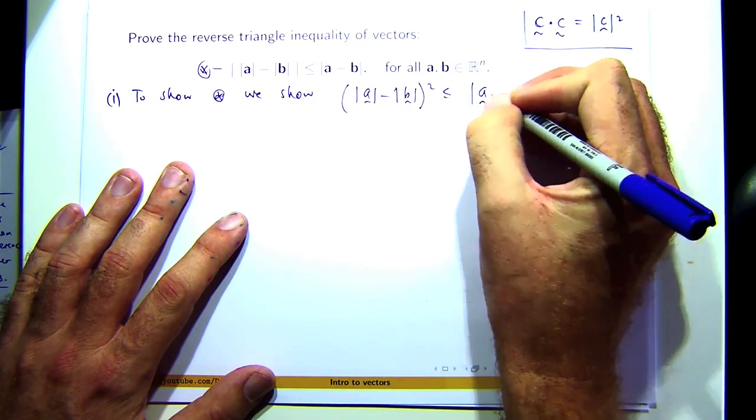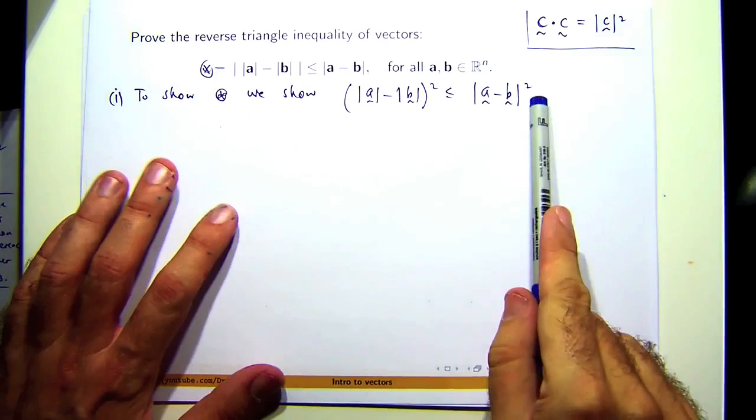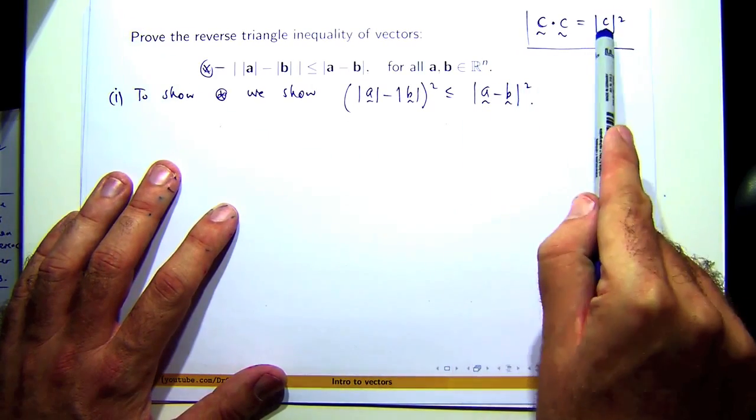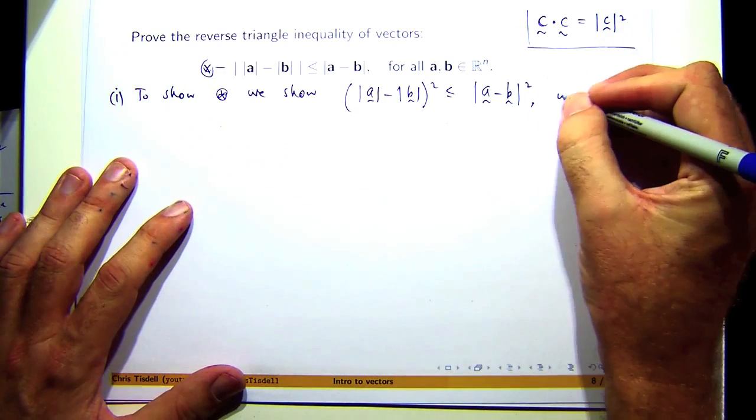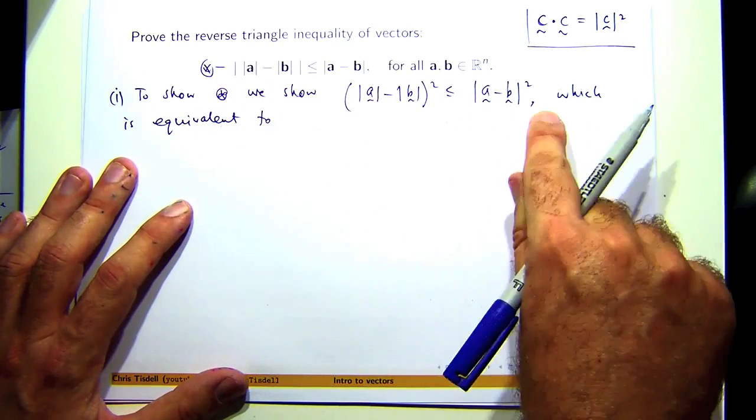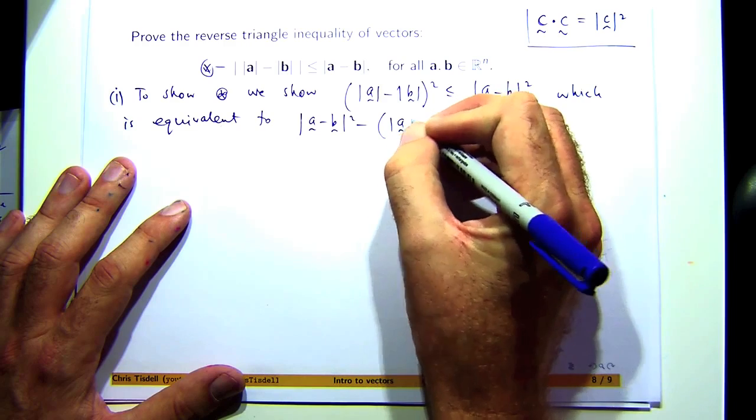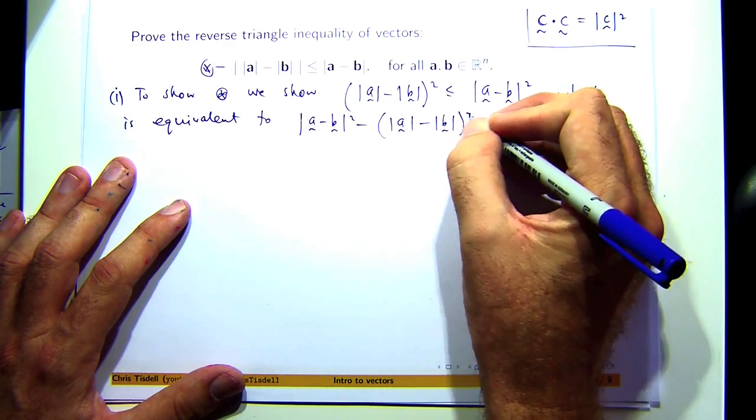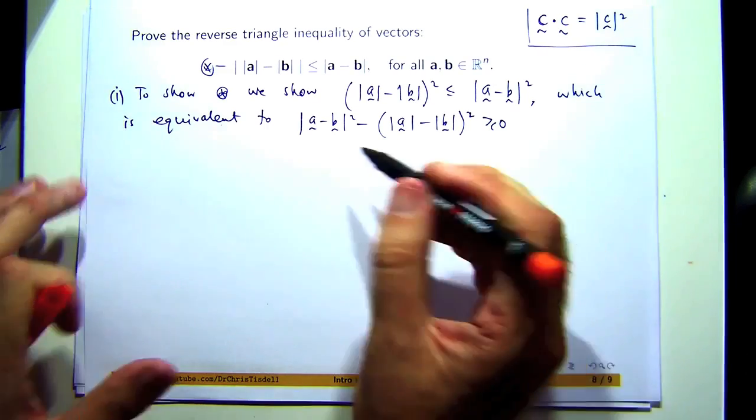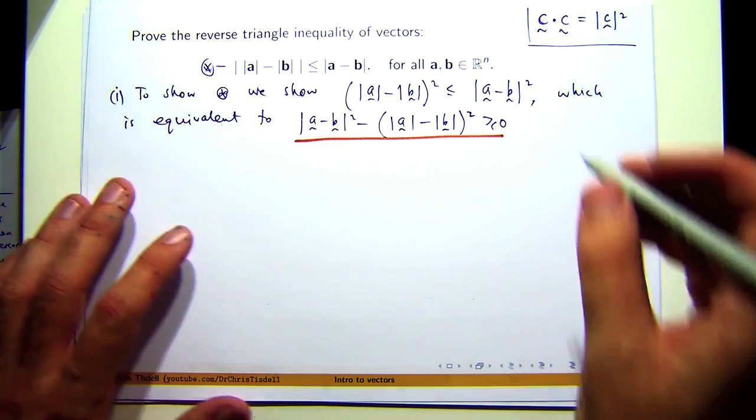So how can we actually prove that? Well, you can connect this and this with c equals a minus b. So let's take this over to the other side, and we're going to show something is actually positive, or sorry, non-negative. So this is actually what we're going to show. We'll work on the left-hand side and show that hopefully it's non-negative. So let's call this double star.